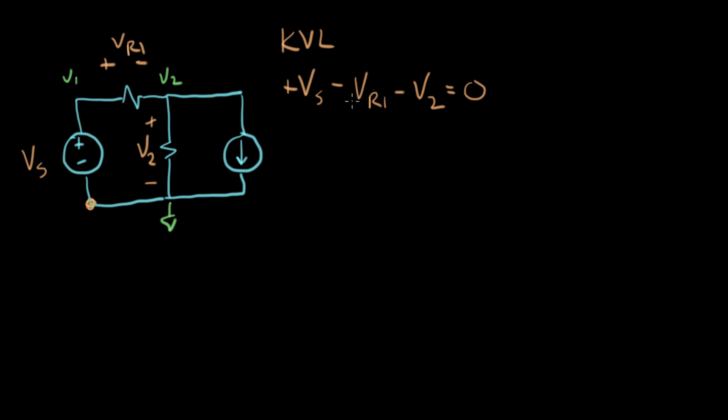Now I'm going to plug in, using node voltages I'm going to write VR1. So I get plus VS minus VR1 is node voltage V1 minus node voltage V2. V1 minus V2, minus V2 equals zero. And we'll just do one more substitution.